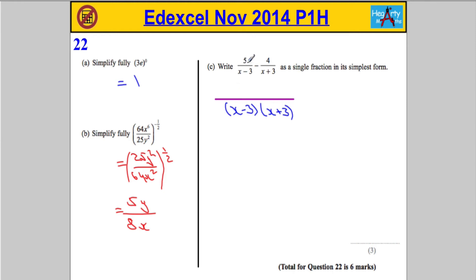Okay, now let's work out what's going to be over here. So, we're writing it as a single fraction. So, x minus 3 into all of this will go x plus 3 times. So, we have 5 lots of x plus 3.